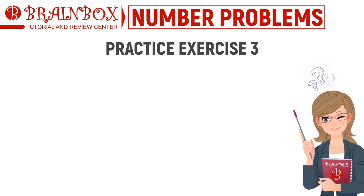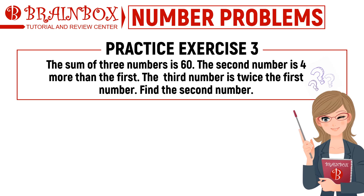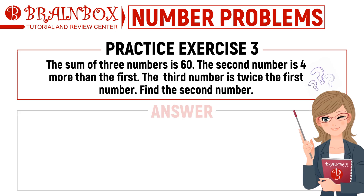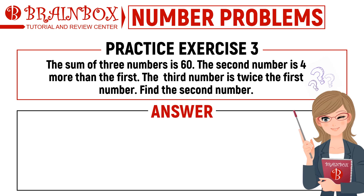Number three: the sum of three numbers is 60. The second number is four more than the first. The third number is twice the first number. Find the second number. Timer starts now.